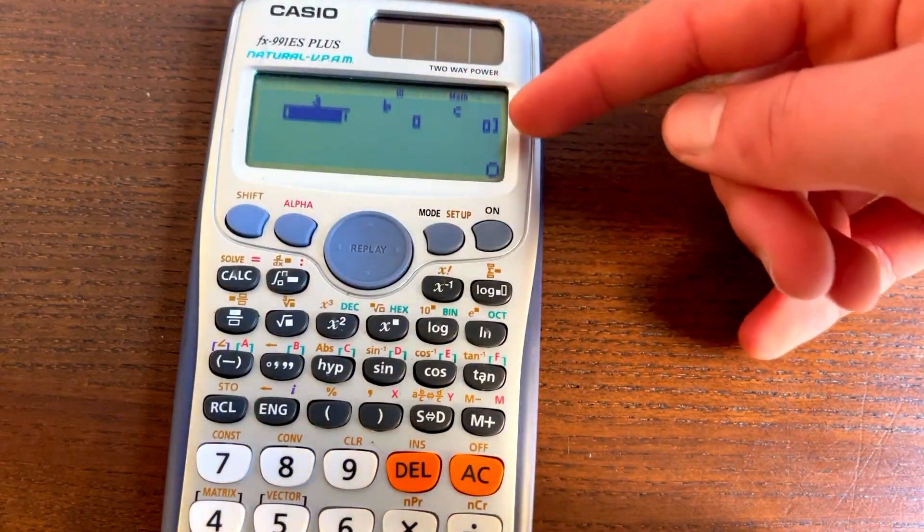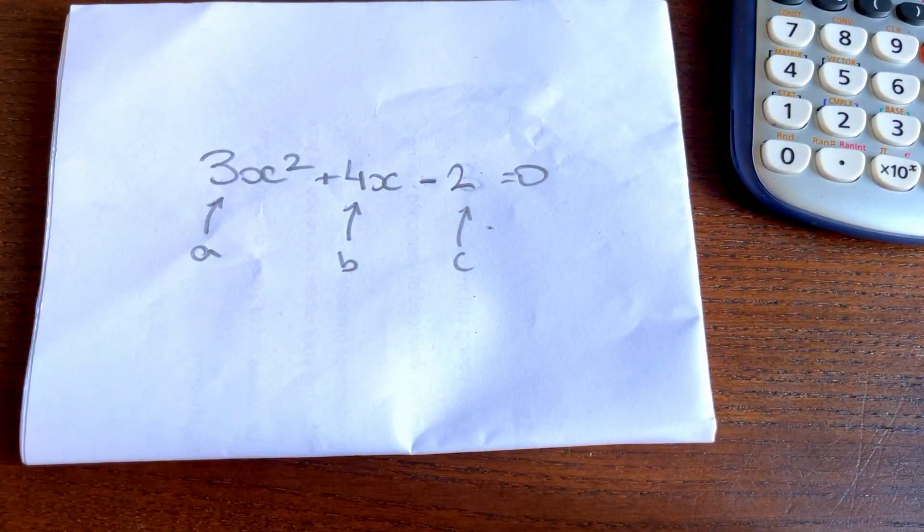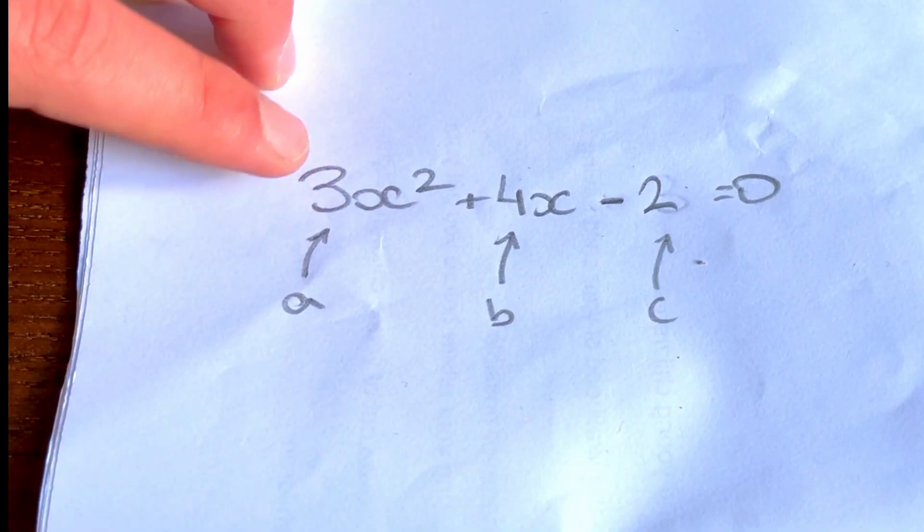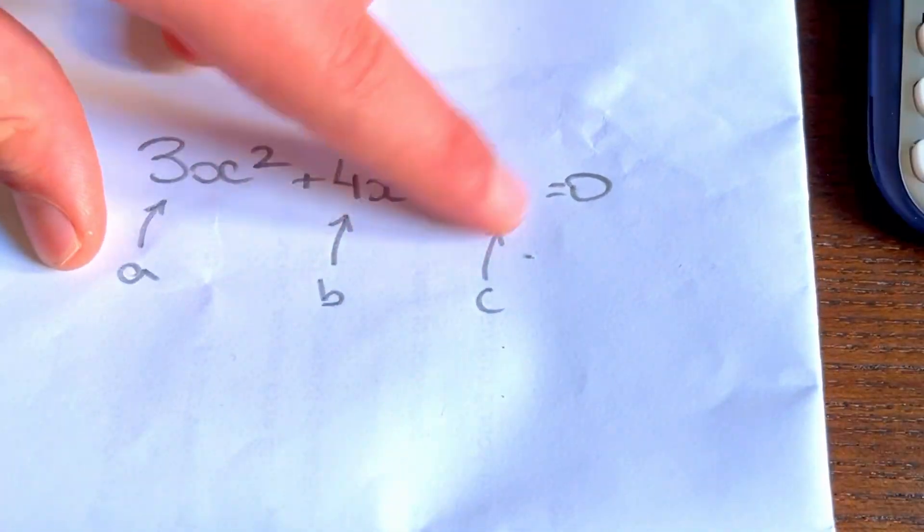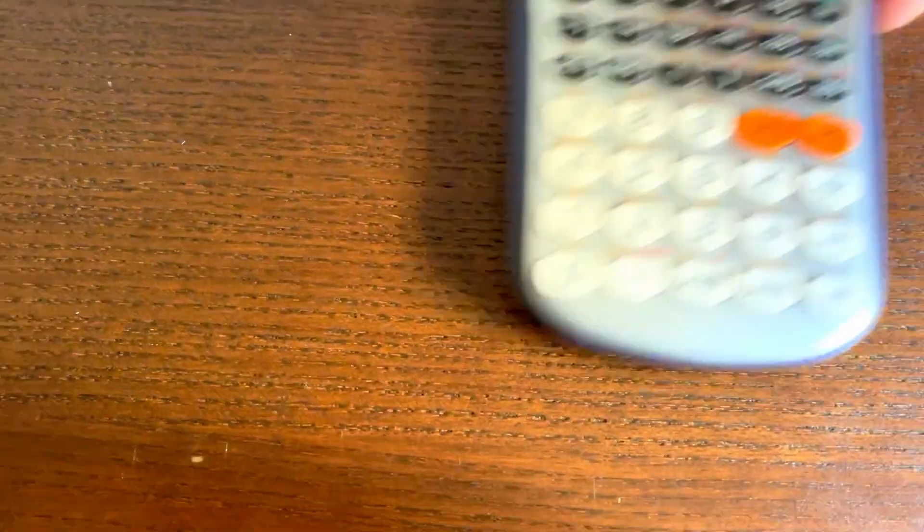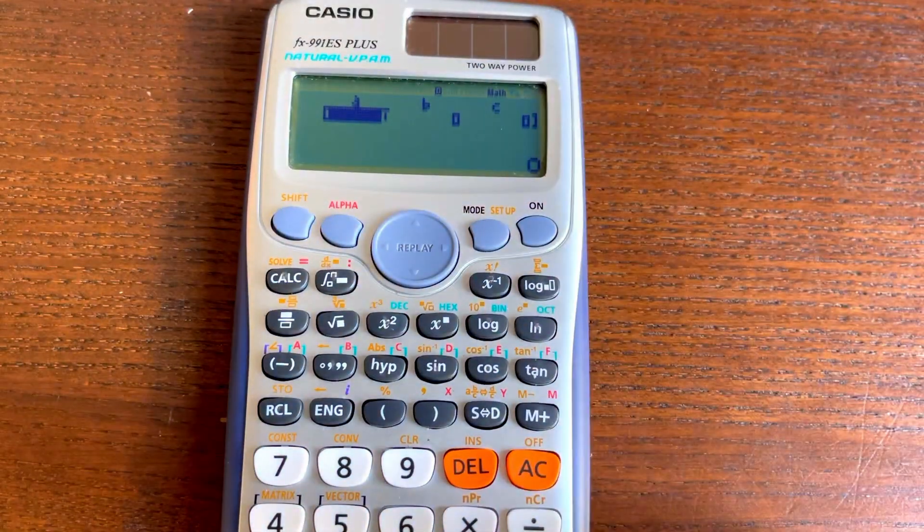So you get given this table right here, and if we have a specific quadratic, so for example, this 3x squared plus 4x minus 2, this here, this coefficient would be the A, this would be the B, and this minus 2 over here would be the C. So if it's minus, you have to make sure that you include that as well. So what we do now is we write these values into our calculator.